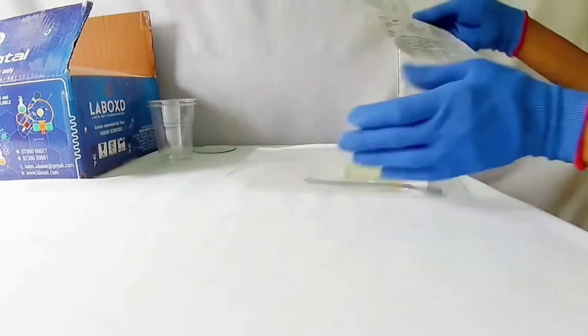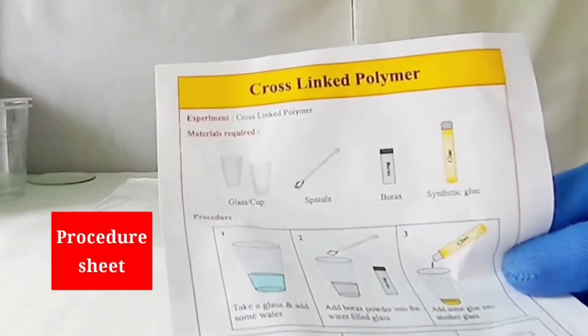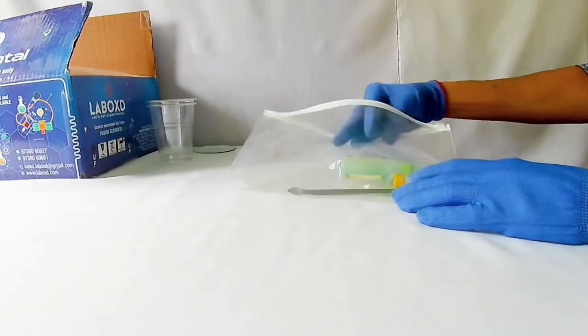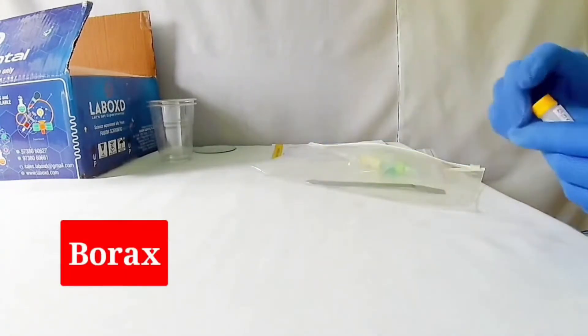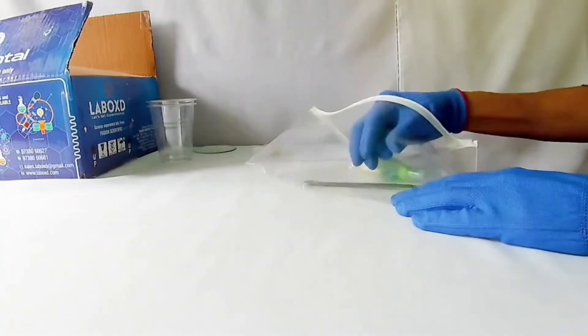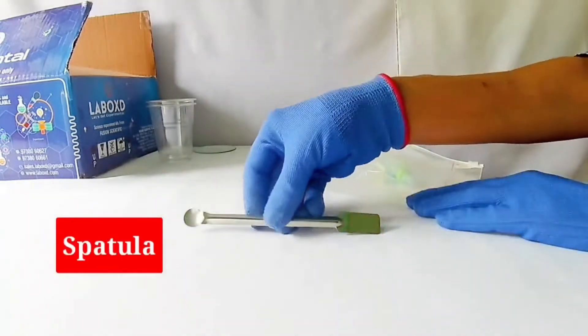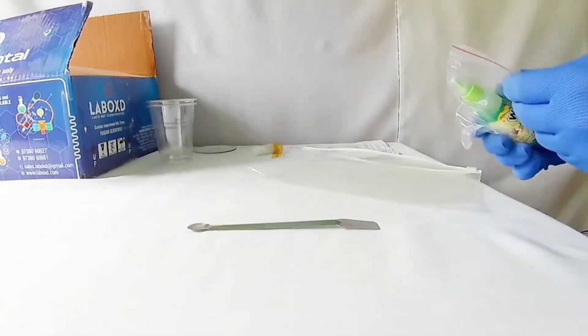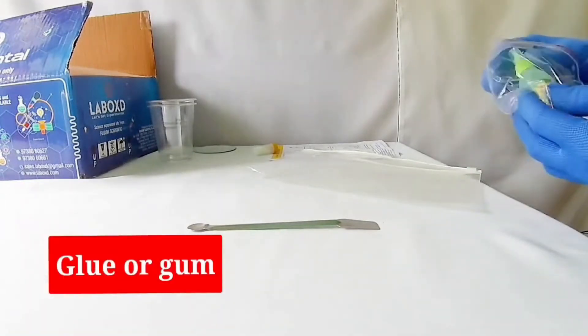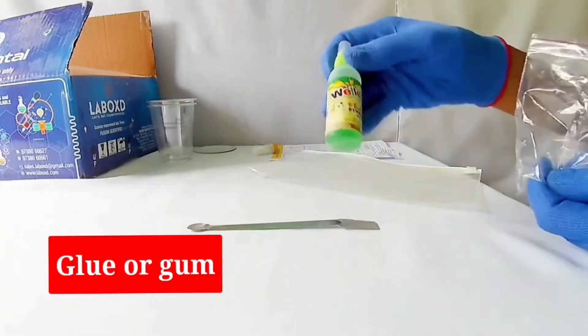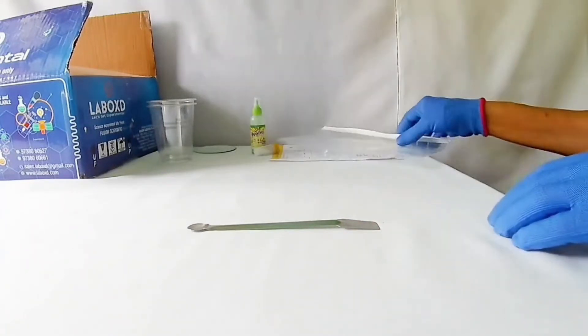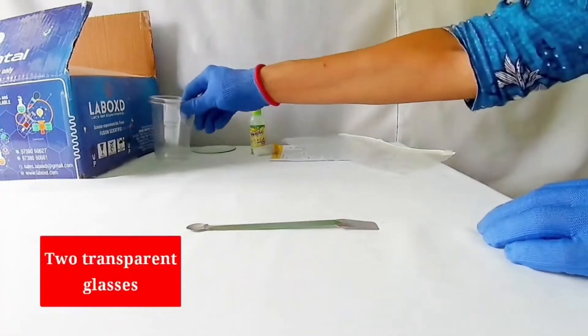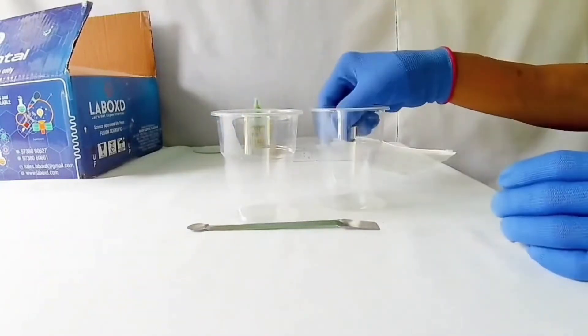In the Activity Packet, we have Procedure Sheet, Borax Powder, Spatula, Glue, and Water. Also, we have two transparent glasses and a watch glass.